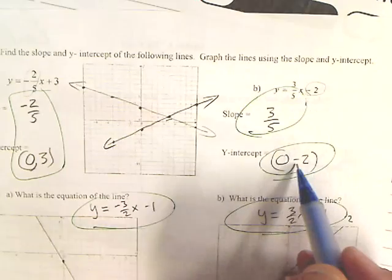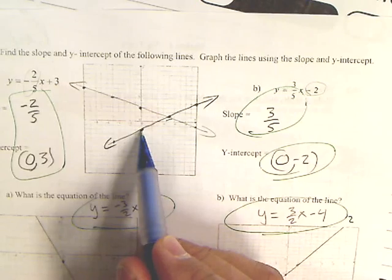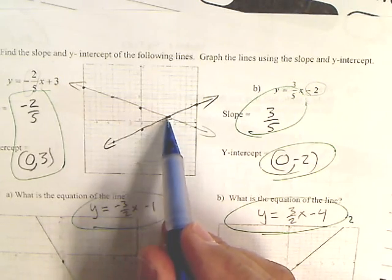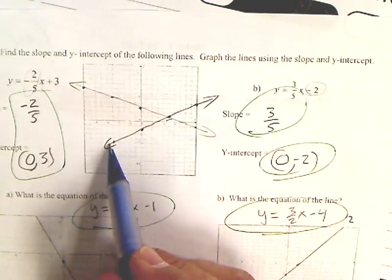(0, -2) is my y-intercept, and there's my slope. So I went dot, and I went up three over five, up three over five. Or I can go negative-negative, so down three back five.